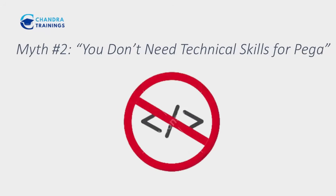Myth number two: you don't need technical skills to work in Pega. The reality is you do require technical skills. You still need to understand data structures, APIs, JSON and complex integrations. For example, when you configure a REST connector, you should know request-response structures and error handling. Pega reduces coding but it does not eliminate logic or thinking.